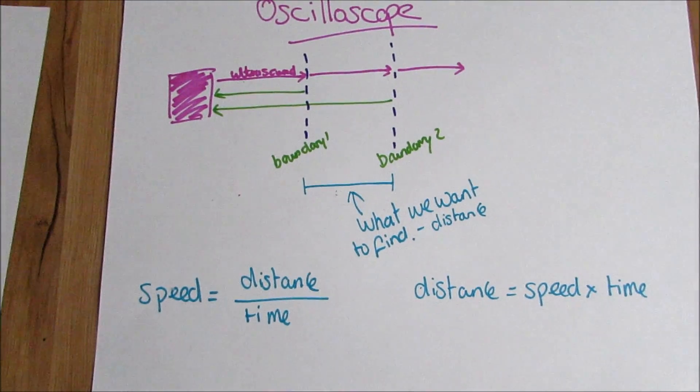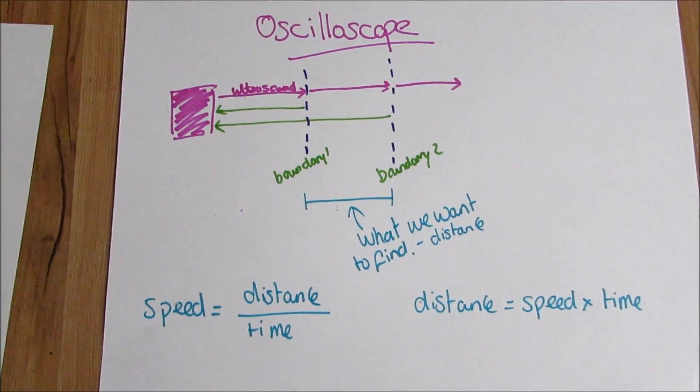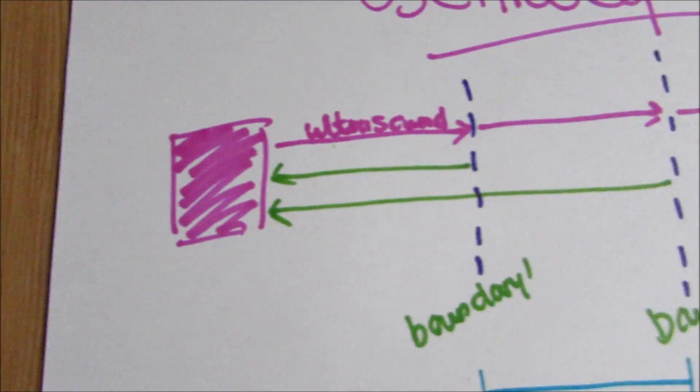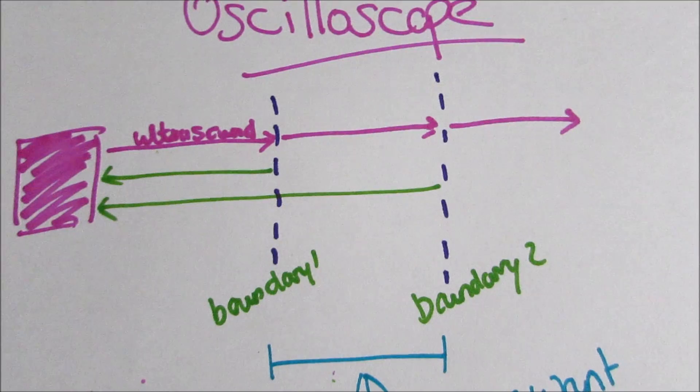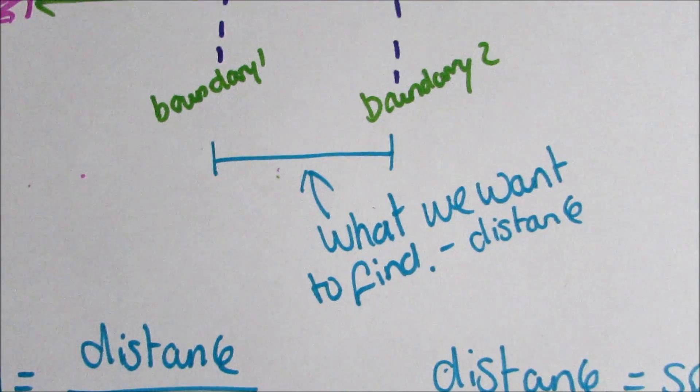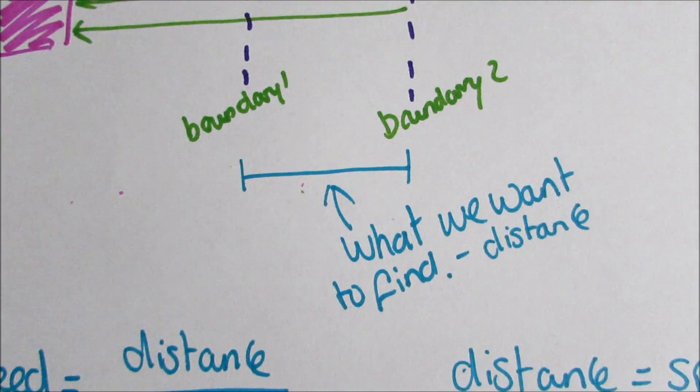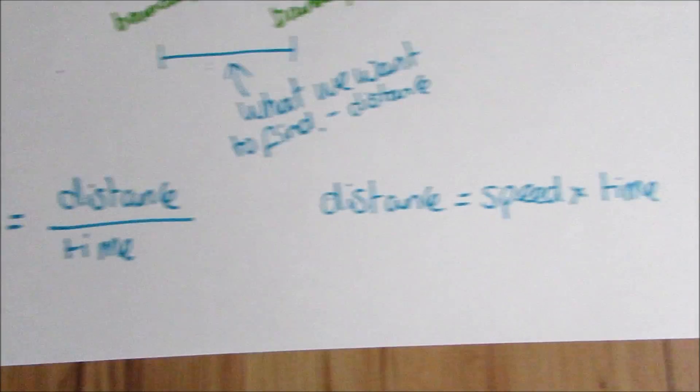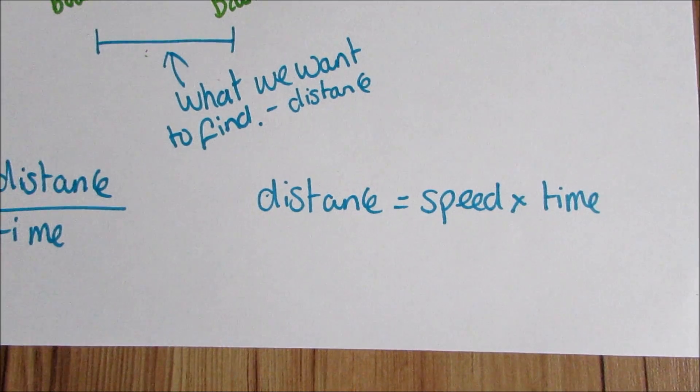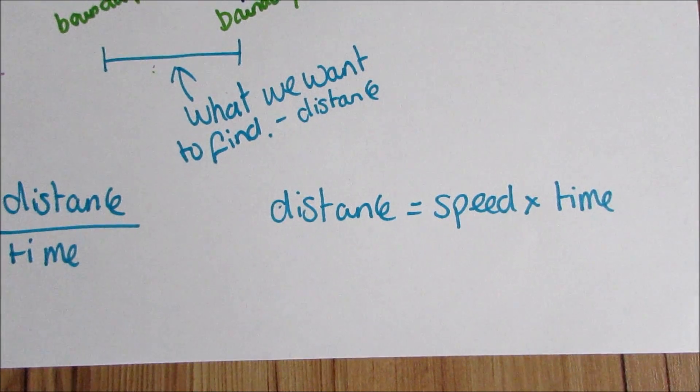An oscilloscope can also be used to tell its distance. Here, we have our ultrasound coming across. It's reflected at boundary one and it's reflected at boundary two. And we want to find the distance between boundary one and boundary two. For this, we use our equation speed equals distance over time. We just rearrange it, so distance is equal to speed times time.